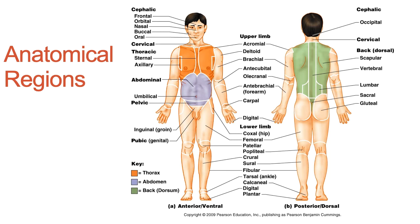At first glance this may seem like a lot, but once you look through these terms, you'll find many sound familiar — nasal, vertebral, gluteal, and pubic regions are words you've already heard. Knowing these terms will also make future sections of this course much easier. Many bones and muscles have their anatomical region in their names. For example, the biceps brachii is in the brachial region, and the femur is in the femoral region.